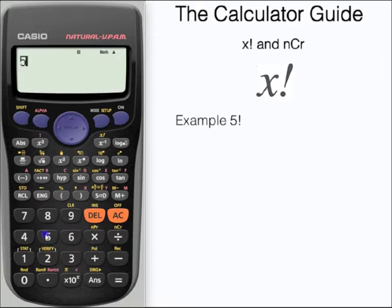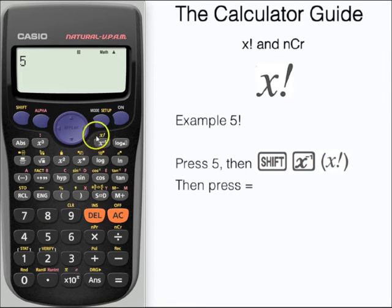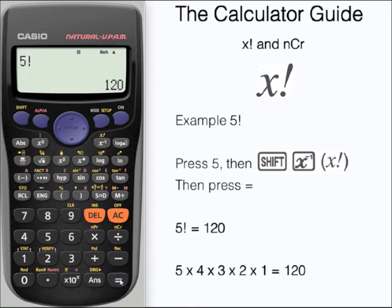Let's do an example now. Let's work out 5 factorial. Press 5 and then we need to press shift and then the X minus 1 which will access X factorial. And here we have our answer, 120. This comes as a result of multiplying 5 by 4 by 3 by 2 by 1, as demonstrated below.